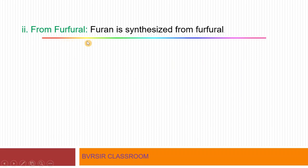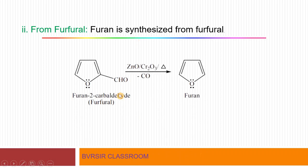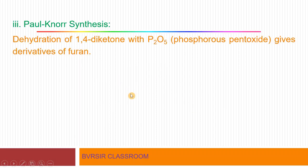Next, furan can be synthesized from furfural. Furfural is a very convenient starting material for preparing furan. Furfural, also called furan-2-carbaldehyde, has a CHO group at the second position and is an aldehyde. When furfural is reacted with a ZnO-Cr2O3 catalyst and heated, carbon monoxide is expelled and the furan molecule is obtained.